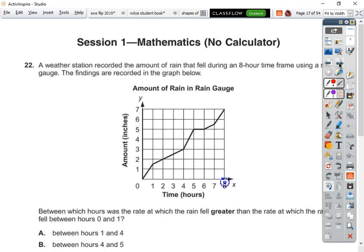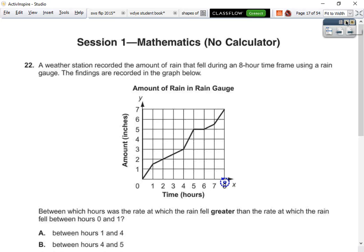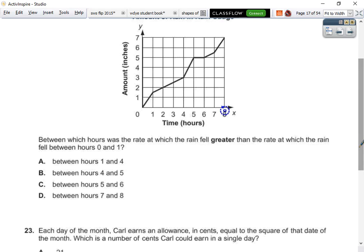22. Weather station recorded the amount of rain that fell during an 8-hour time using a rain gauge. Between which hours was the rate greater than the rate in which the rain? So this has a slope of 1.5 over 1, so that's 3 over 2. This definitely was going at 2, so we want option B because that has a slope of 2.